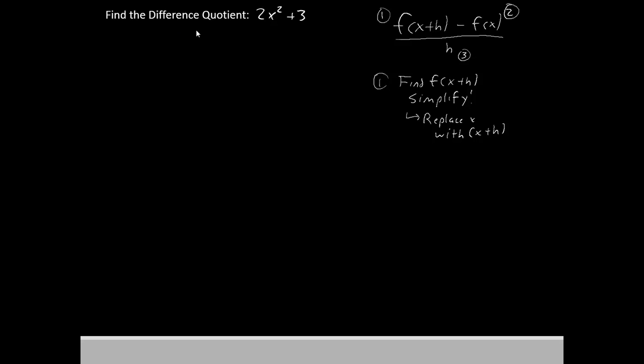So instead of having 2x squared plus 3, we will now have 2, the quantity x plus h squared, plus 3.